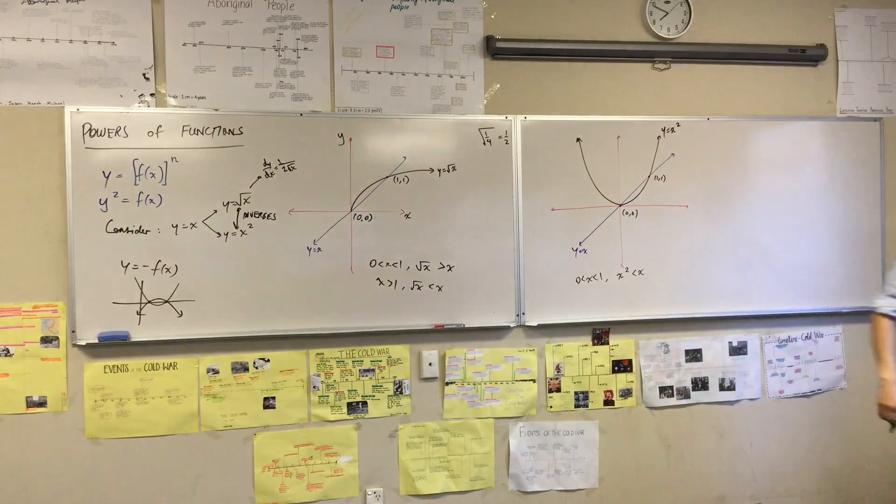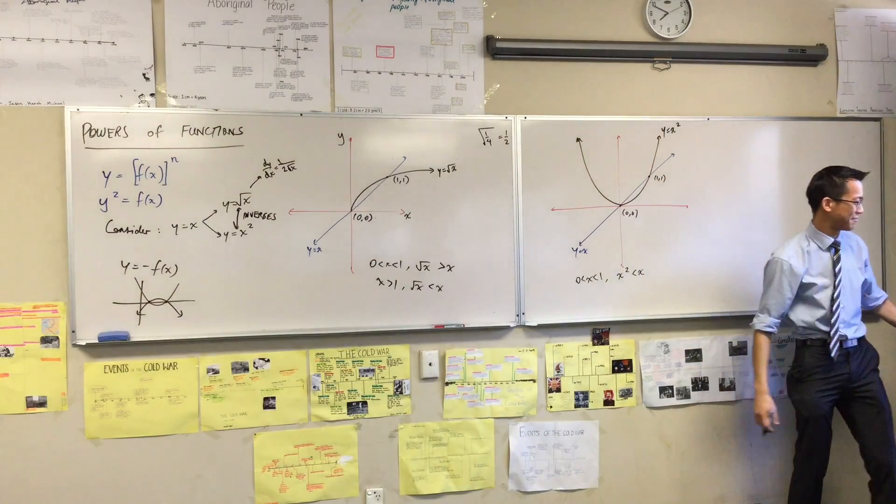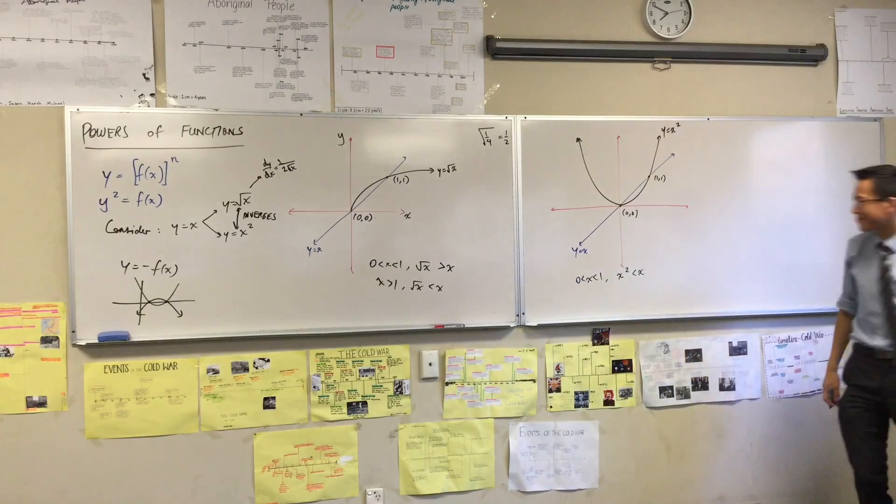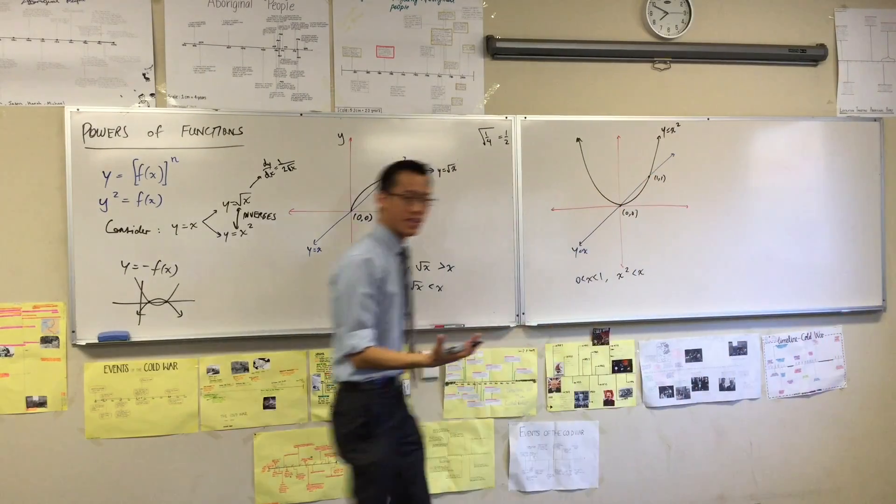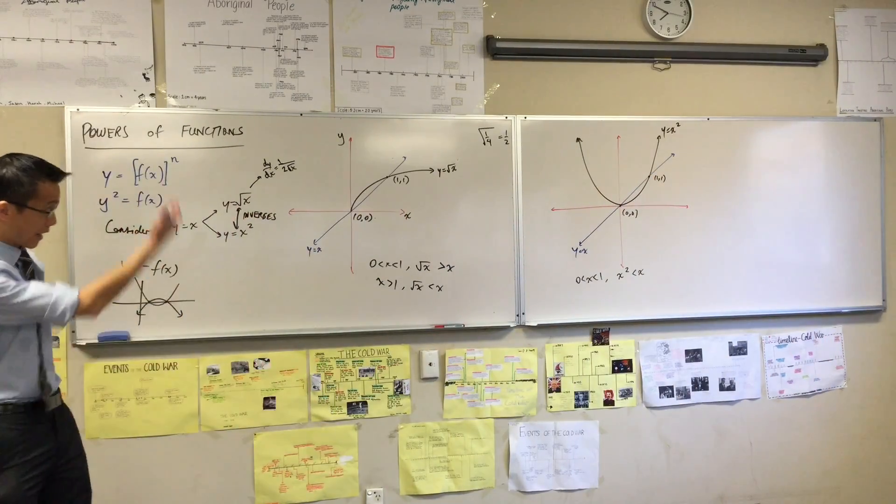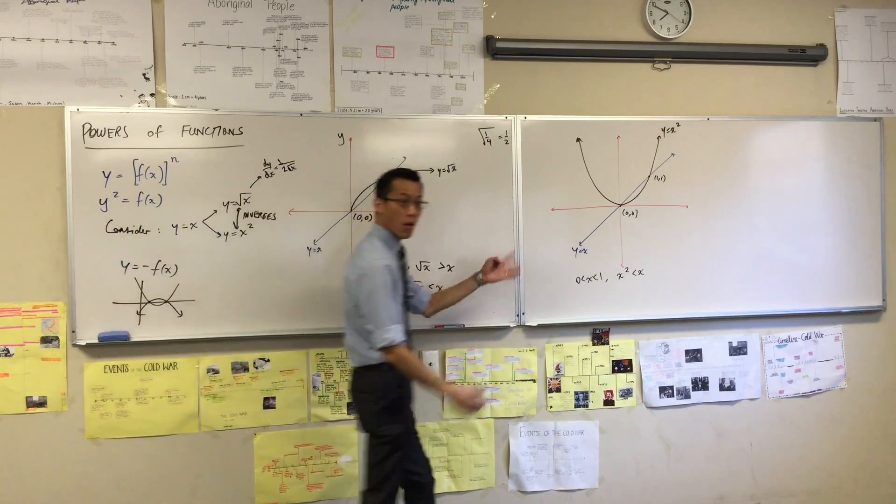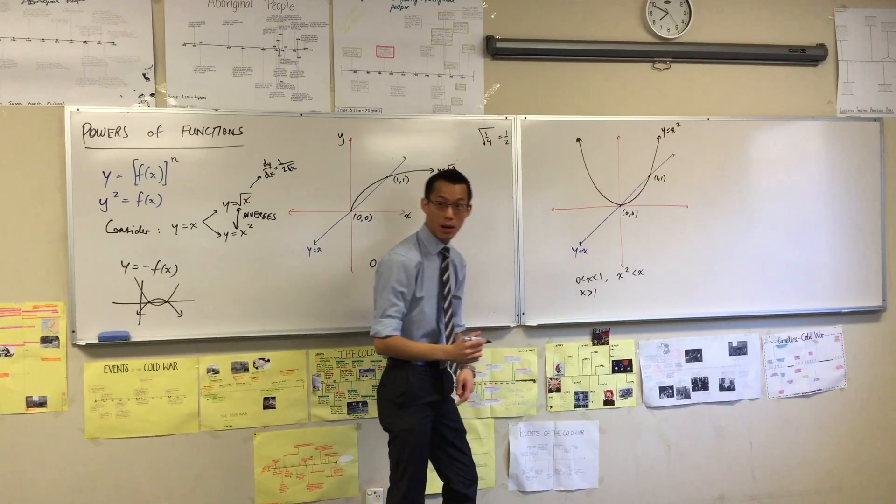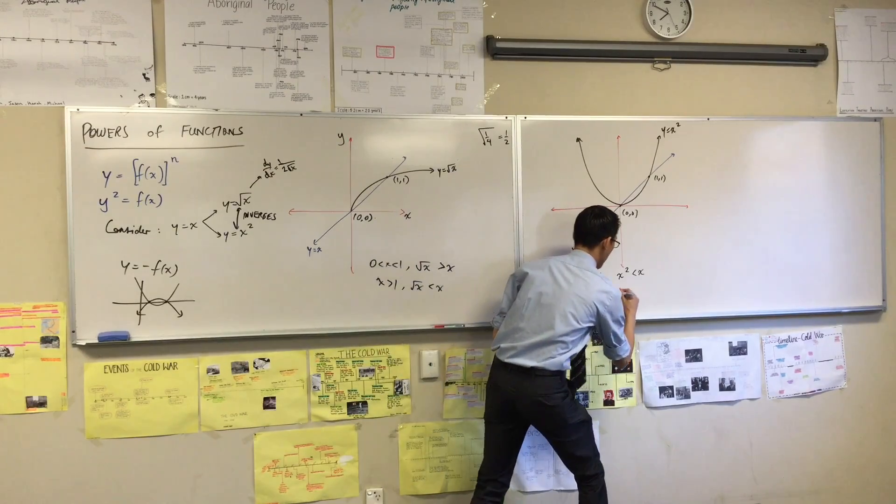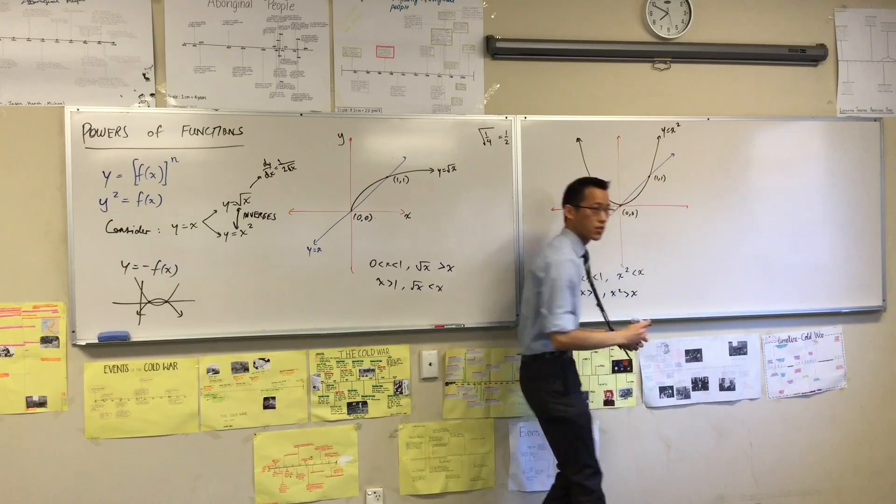Colloquially, I suppose, if you square a fraction like a quarter, or an eighth, or 0.2, or something like that, then yes, it will get smaller. Whereas if you take a big number, then when you square it, of course, you're going to get something larger.